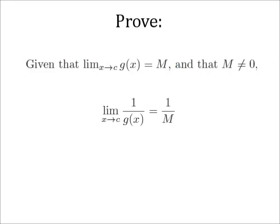Now, if we had been given that the limit as x approaches c of 1 over g of x is 1 over m, we could have simply applied the product law of limits, which we proved in a recent video. But we have been given that the limit as x approaches c of g of x is m. So in the rest of this video, we will prove that given that the limit as x approaches c of g of x is m, the limit as x approaches c of 1 over g of x is 1 over m. And from there, using this proof and the product law of limits, we can conclude that the limit as x approaches c of f of x over g of x is l over m.